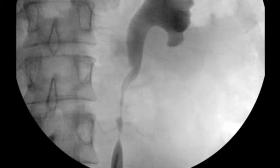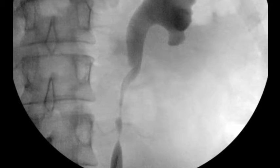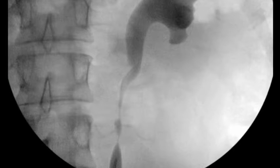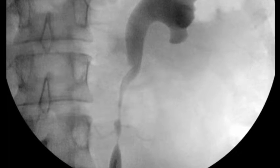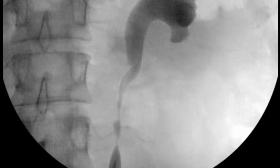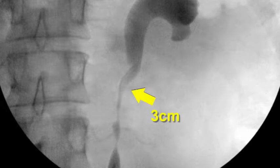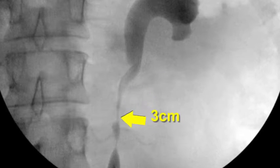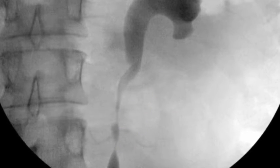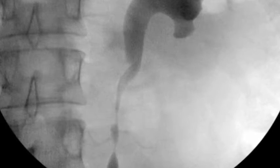The patient underwent cystoscopy with retrograde pyelogram confirming a long segment ureteral stricture in the proximal ureter. The stricture was approximately 5 cm from the UPJ and was 3 cm in length. There was not sufficient renal pelvis dilation to consider a spiral flap reconstruction.